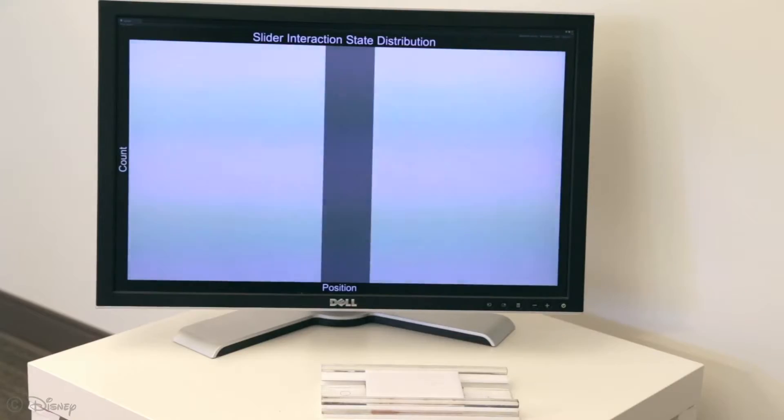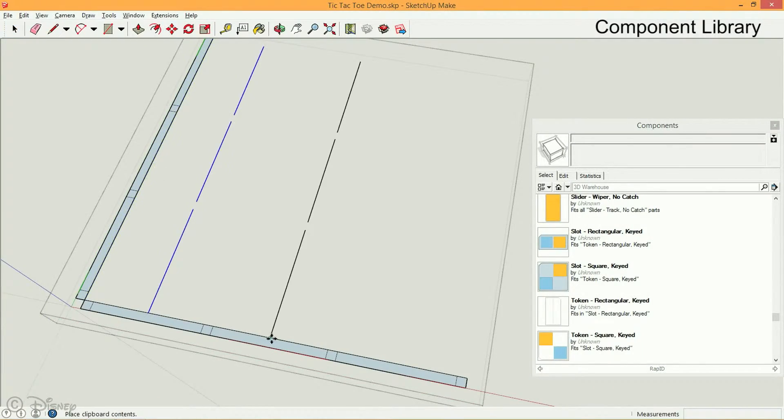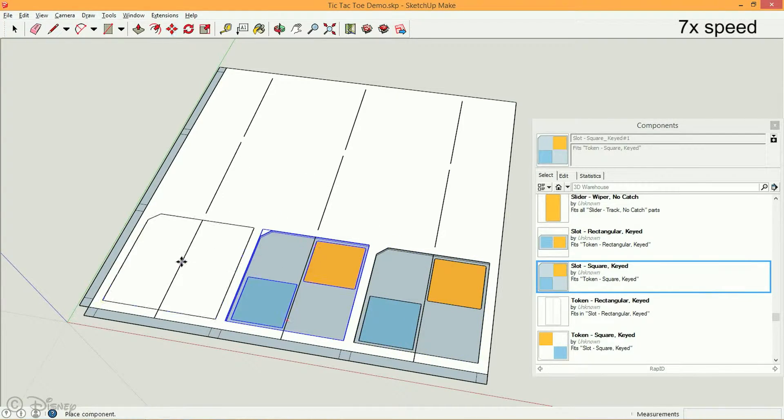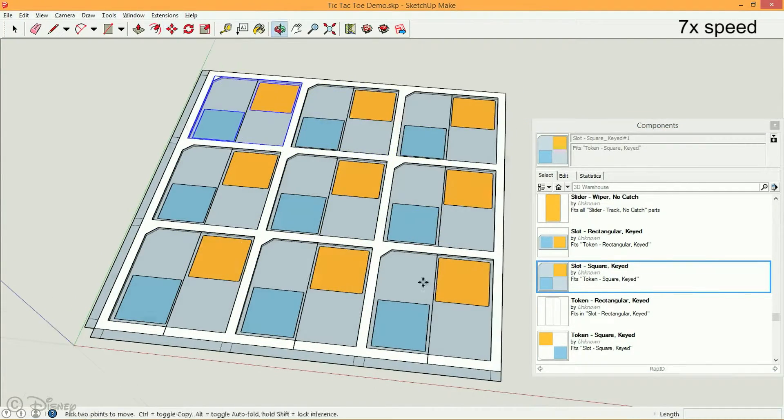During object design, users can use Rapid's SketchUp extension to specify a number of useful building blocks.